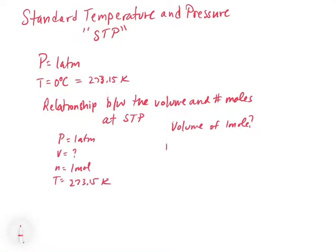So if we want to set up the volume, we do PV equals nRT. We divide both sides by P to get the V all by itself, so we get V equals nRT over P. We start plugging in one mole times 0.0821 liters atmospheres per mole Kelvin.